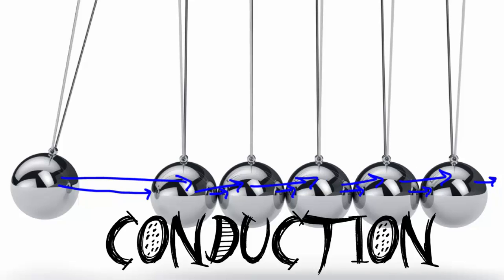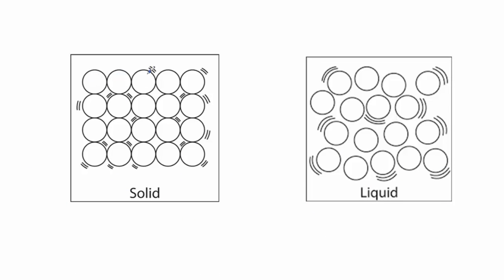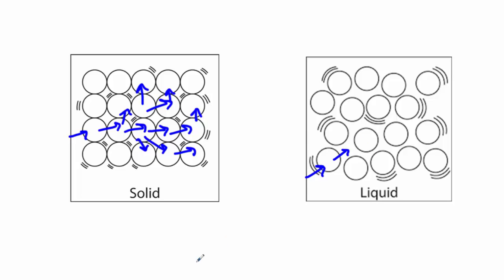This is what conduction is. Solids are packed very tight together, so if I were to bang into this particle right here, you could see how very easily these particles could all start banging into one another. Particles that are really close like that would become good conductors of heat, because they're all so close together. But particles that are not so close together — like in a liquid — if I were to bang into this particle, it might move but may not hit anything else. So liquids don't work so well with conduction. Solids work great with conduction. Heat transfers through solids with conduction, not so much with liquids.